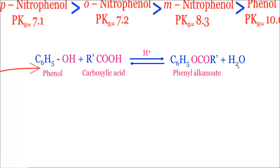Now let's understand how this formation occurs. The O-H bond cleaves — this is also a reaction with respect to cleavage of the O-H bond. The O-H bond of the phenol cleaves, so this H reacts with the O-H of the carboxylic acid, resulting in the formation of water. What we are left with is C6H5O linked with COR. Therefore it is called phenyl alkanoate. The overall general reaction: C6H5OH plus R-COOH in acid medium gives C6H5OCOR plus H2O.